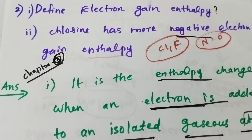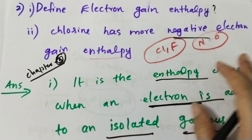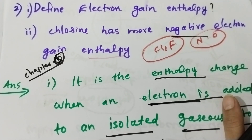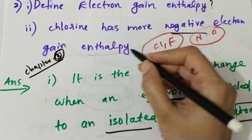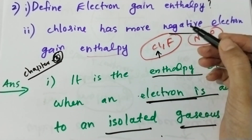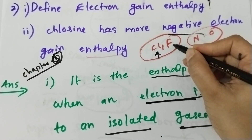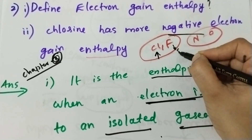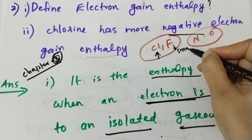Chlorine has more electron gain than fluorine because chlorine is larger and can accommodate an extra electron with less repulsion. That is the answer.